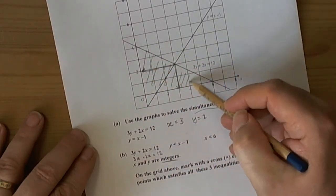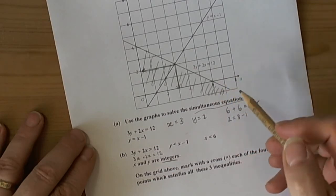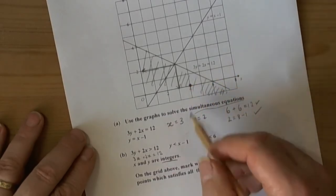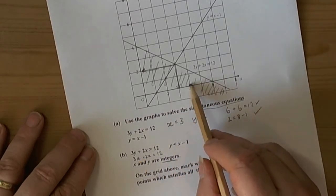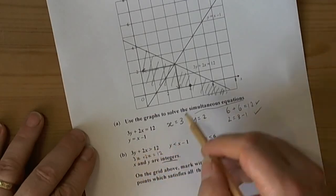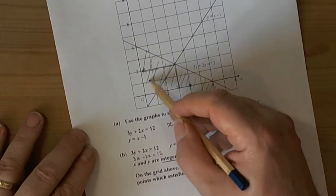Anything below that line is discounted, so we shade out anything below that line. To check this works, take the coordinate (4, 0): 3 times 0 is 0, 2 times 4 is 8. Is 8 bigger than 12? No. So that's why we shade underneath.